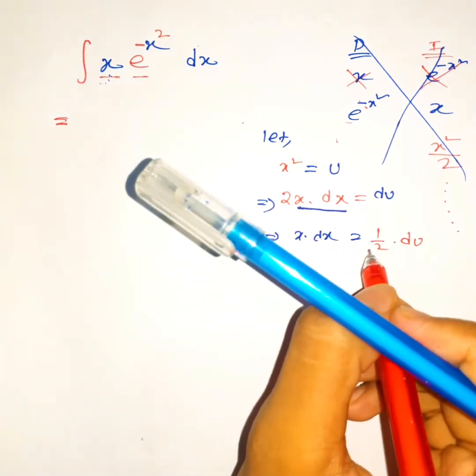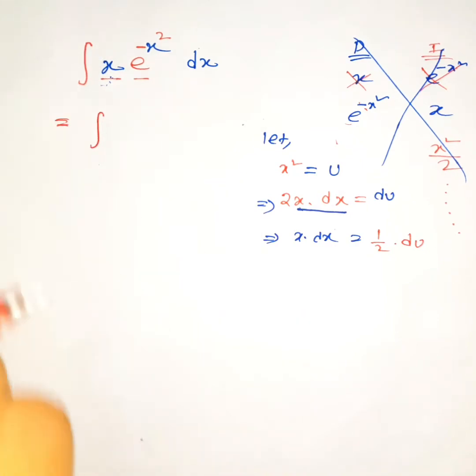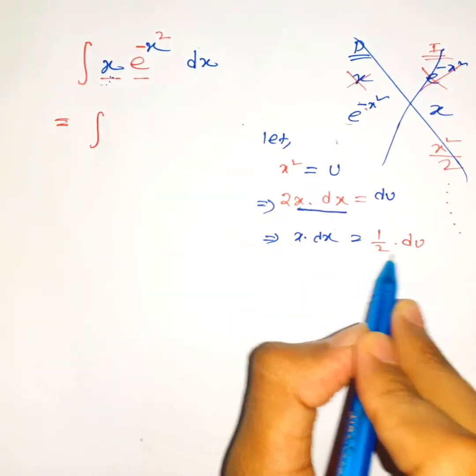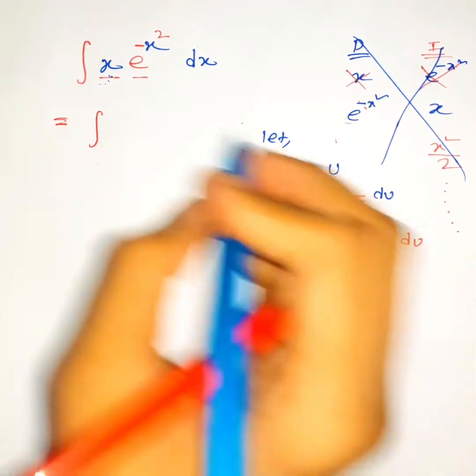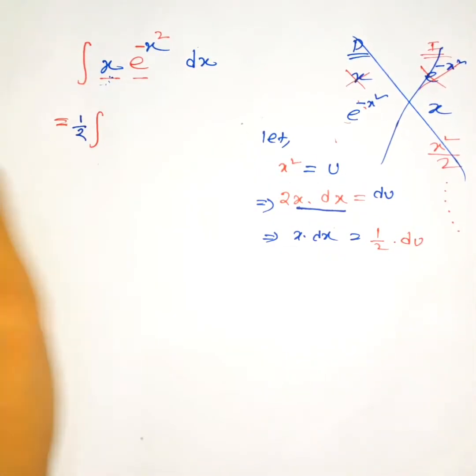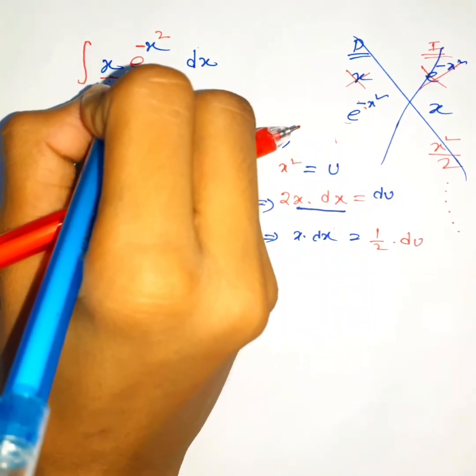Now let's make this substitution. The integral of x dx equals half du. One over two is a constant, so let's write it outside of the integral.